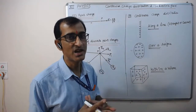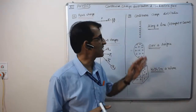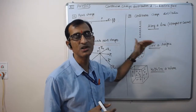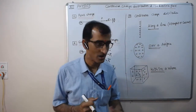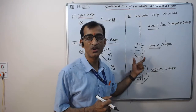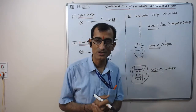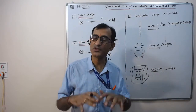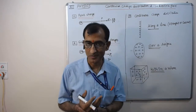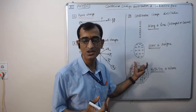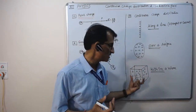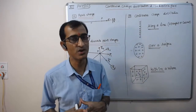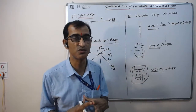There are three types of charge distribution. If charge is distributed along a line, it is known as linear distribution of charge. If charge is distributed over a surface — like a surface of a plate, square, or sphere — it is known as surface charge distribution. And if the charge is distributed within a volume, it is known as volume distribution of charge.